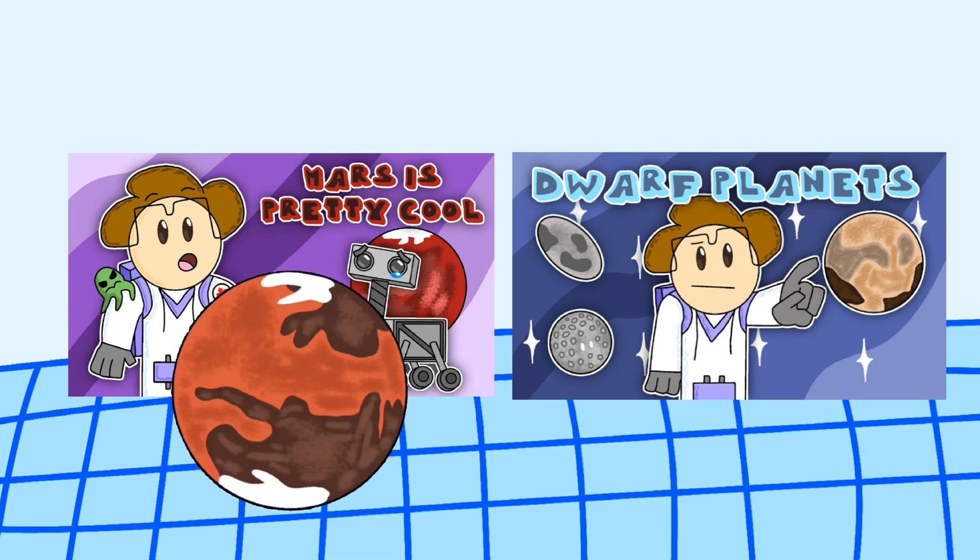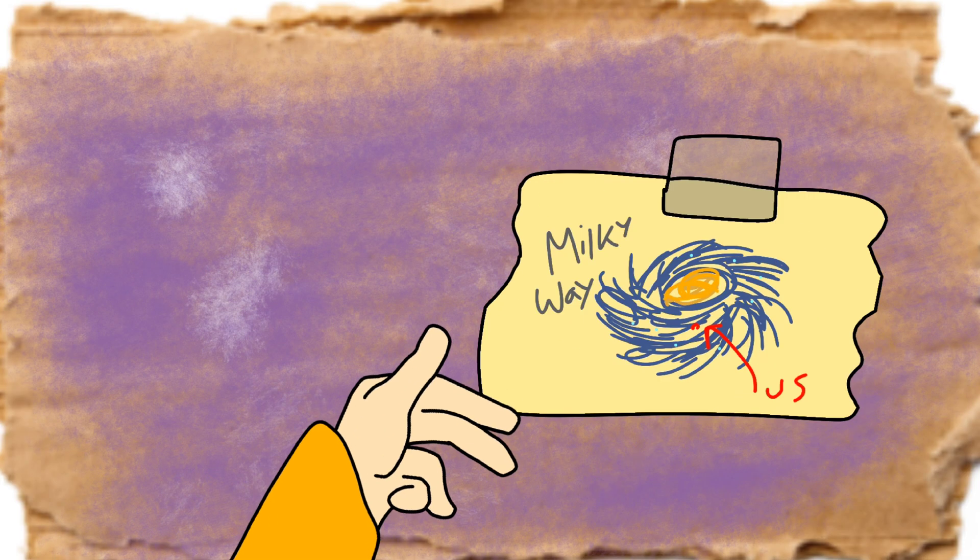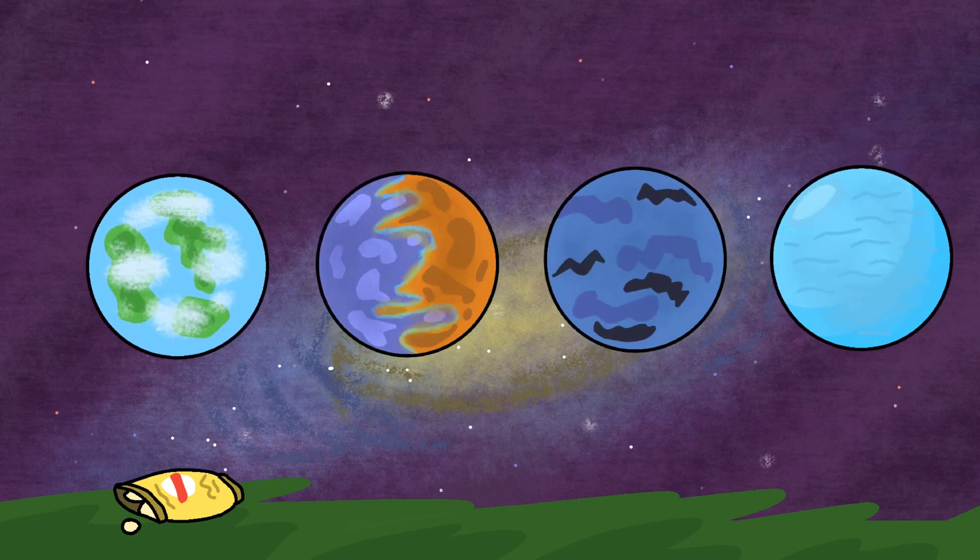So in previous space videos, I've talked about Mars and the five dwarf planets. In this video, however, I think we should leave our solar system and talk about exoplanets, which the term basically means any planet that exists outside of our solar system. But because of the stupid amount of exoplanets that exist, I'll just choose four planets at random and then talk about those.